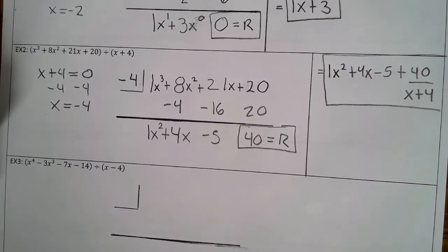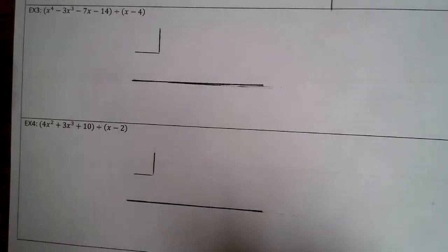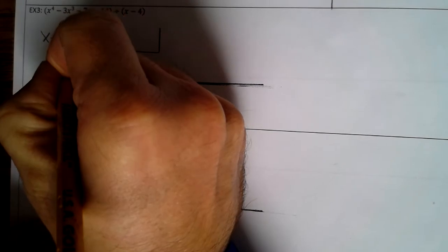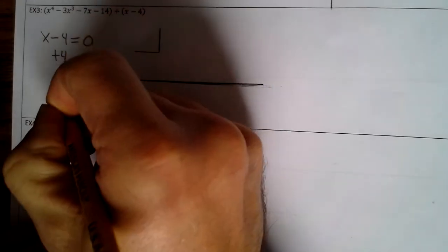Alright, so I'll finish up with example 2. Alright, now let's take a look at example 3. Okay? So we start by setting x - 4 equal to 0. Add 4 to both sides. So then x equals 4. So that number goes here.